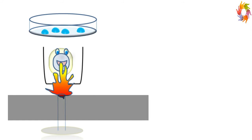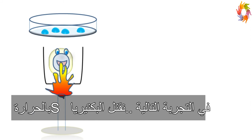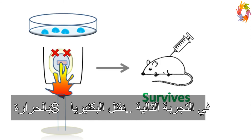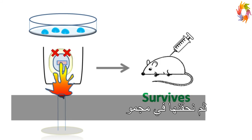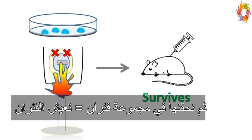In the next experiment, the cells of the smooth strain were killed by heat. When these heat-killed cells are injected in mice, the mice survive.